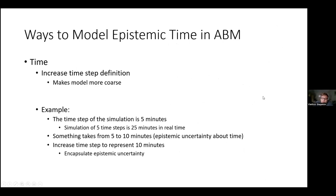Moving on to modelling epistemic uncertainty, one of the simplest approaches is modelling time. If something takes between five and ten minutes and your time step is five minutes, you increase the time step definition to represent ten minutes, which reduces epistemic uncertainty but makes the model more coarse. This encapsulates the uncertain duration into a single time step so only one action can take place.